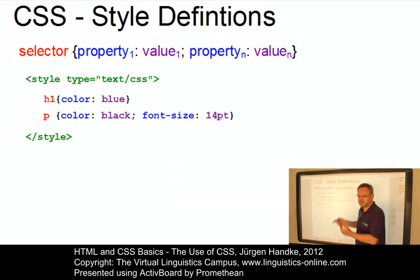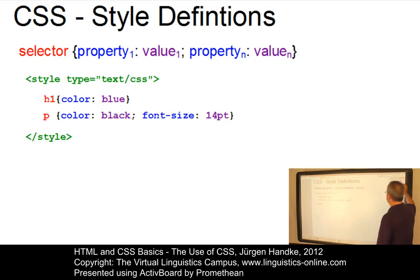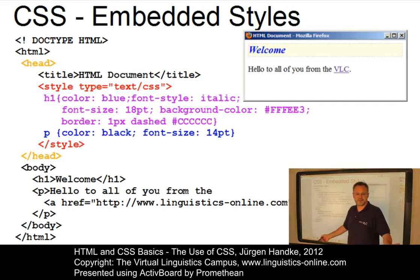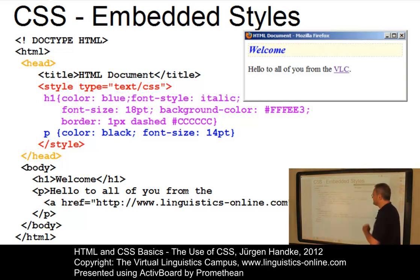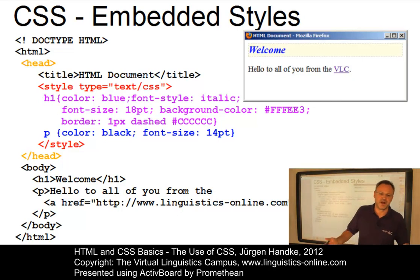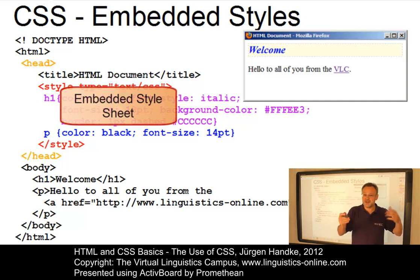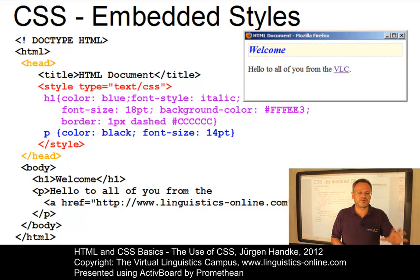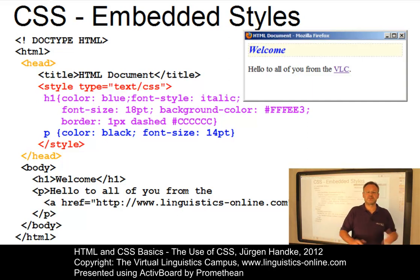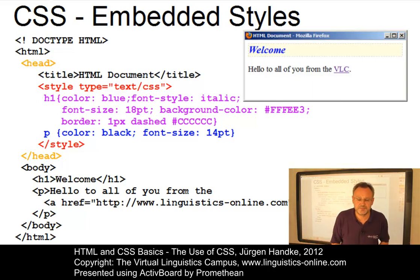Having now defined some selectors with their property-value pairs, we can apply them to our document. We have the style tag within the header and inside the style tag, the two style definitions we defined in detail. The result is still the same. However, the advantage is that the two styles defined within the header — that is, within the embedded stylesheet — now apply to all tags within the same document. And if you want to change a style, we only have to do it once in the embedded stylesheet and no longer in each tag.